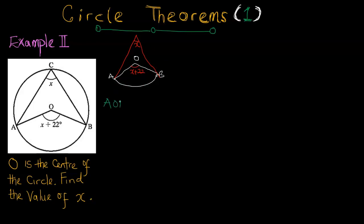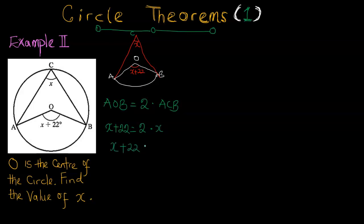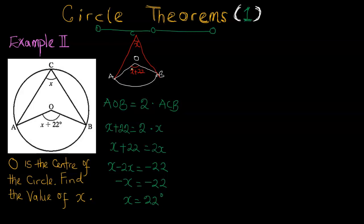So angle AOB — that's the angle at the center — would be twice angle ACB. AOB is (x + 22) degrees, and ACB is x. So x + 22 = 2x. Collecting like terms: x − 2x = −22, giving −x = −22, so x = 22 degrees. We can verify: since x = 22, the angle at the center is x + 22 = 22 + 22 = 44 degrees, and the angle at the circumference is 22 degrees — confirming that 44 is twice 22.